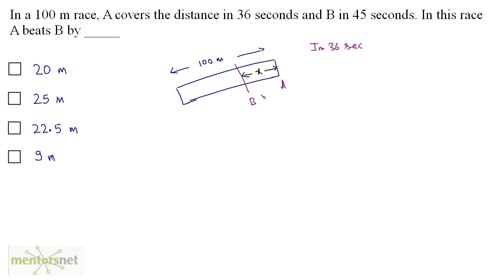So this distance x will be covered in how many seconds? B covers the whole distance in 45 seconds, and currently B is running for 36 seconds. So this distance will be completed in 45 minus 36 seconds.